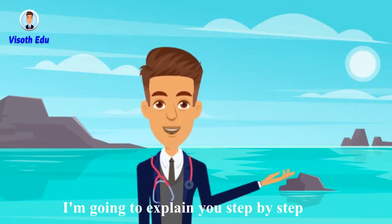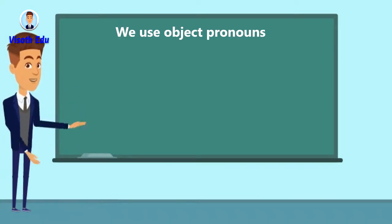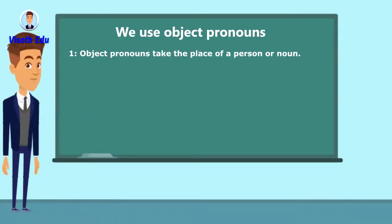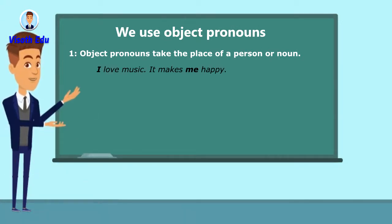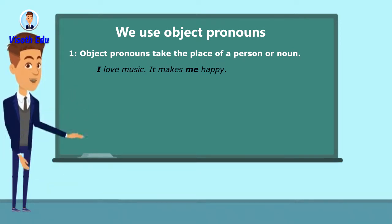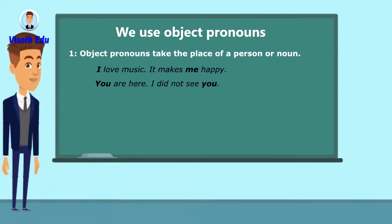We use objective pronouns to take the place of a person or noun. For example: 'I love music, it makes me happy.' 'Me' is the objective pronoun of the subject pronoun 'I.' 'You are here, I did not see you.' 'You' is the objective pronoun; 'see' is the objective verb.